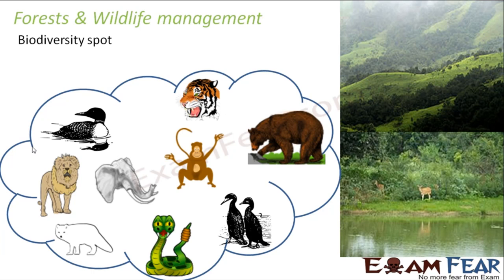Forest is a biodiversity spot. Biodiversity means diversity — different types of living organisms. Just like diversity among people means different cultures and thoughts, in a forest you have so many different kinds of living organisms: different kinds of animals, insects, birds, and plants. So many different kinds of living organisms in the same area — that is why forest is known as a biodiversity spot and a very precious natural resource.